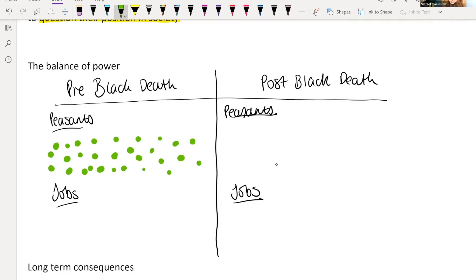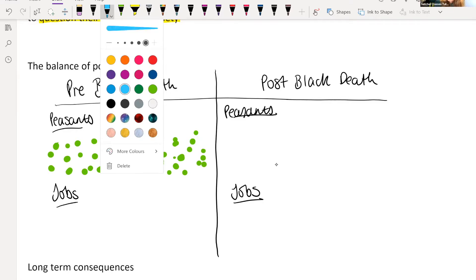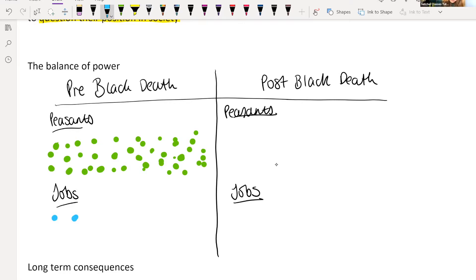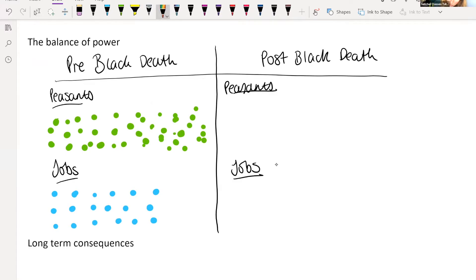Before the Black Death, we've got a lot of peasants. And then we've got a certain number of jobs. There's only a certain number of lords. There's only a certain amount of land. So peasants versus jobs. We've got a lot of peasants and we've got not as many jobs. So, what this means is there is a balance of power here, which means that the lords hold the power.